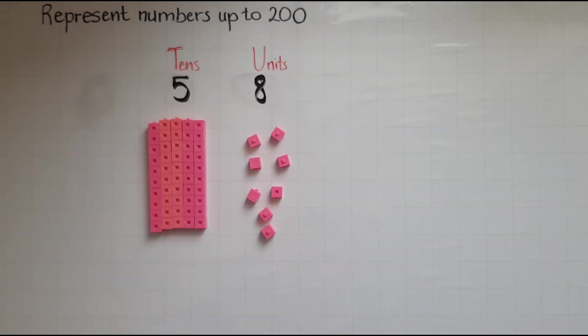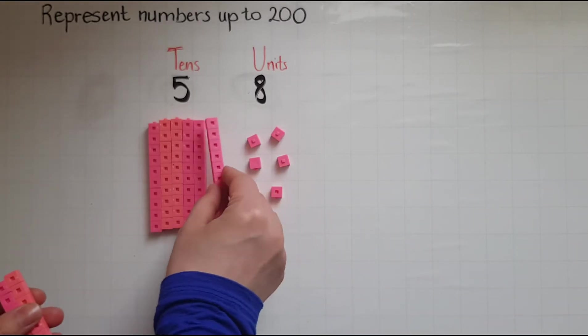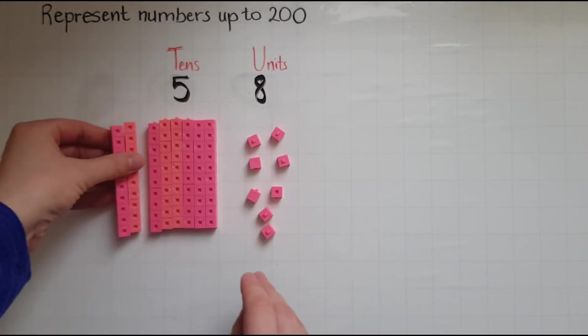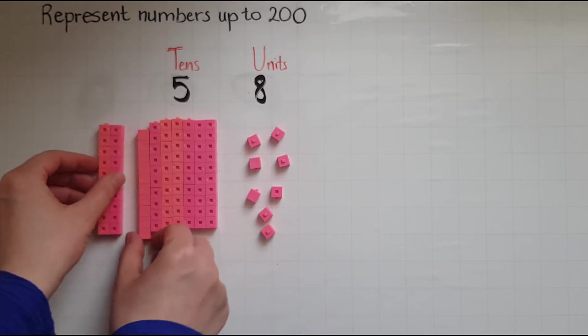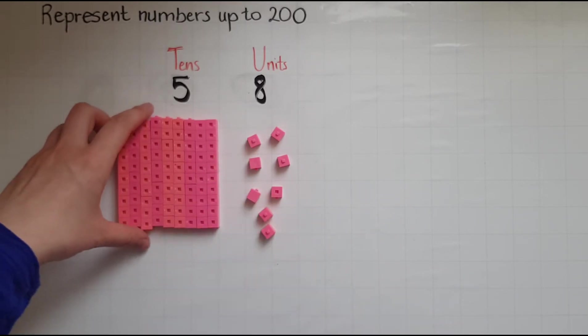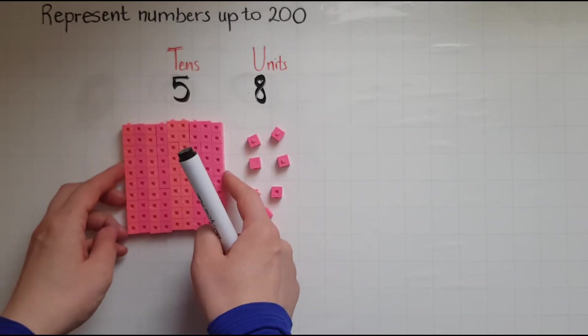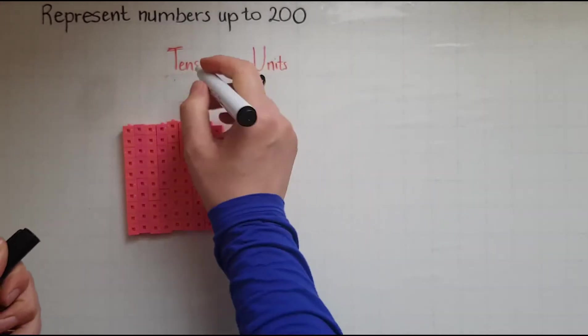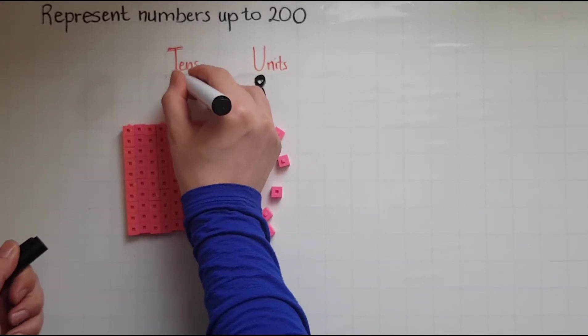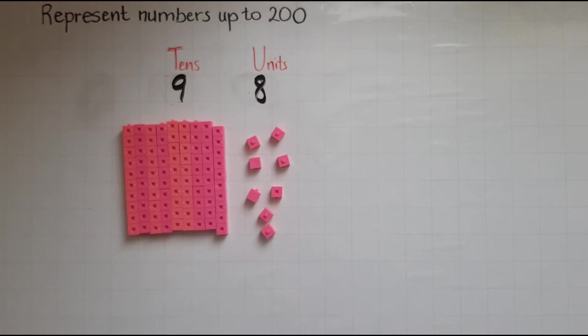If I had a few more of these that make 60, 70, 80 and another one that makes 90. So nine blocks of 10 will change this into a nine. So I've got 98.